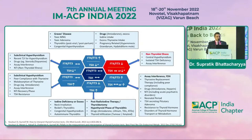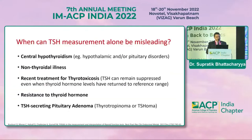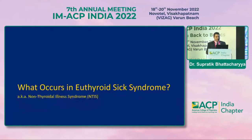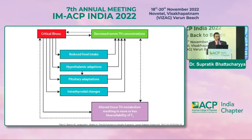When can TSH measurements alone be misleading? In conditions like central hypothyroidism, non-thyroidal illness, recent treatment for thyrotoxicosis, resistance to thyroid hormone, or TSH-secreting pituitary adenoma, the picture is very similar. In euthyroid sick syndrome, there is a critical illness and multiple things happen: reduced food intake, hypothalamic adaptations, pituitary adaptations, intrathyroidal changes, leading to decreased serum thyroid hormone concentrations and altered tissue thyroid hormone metabolism, resulting in altered bioavailability of T3.